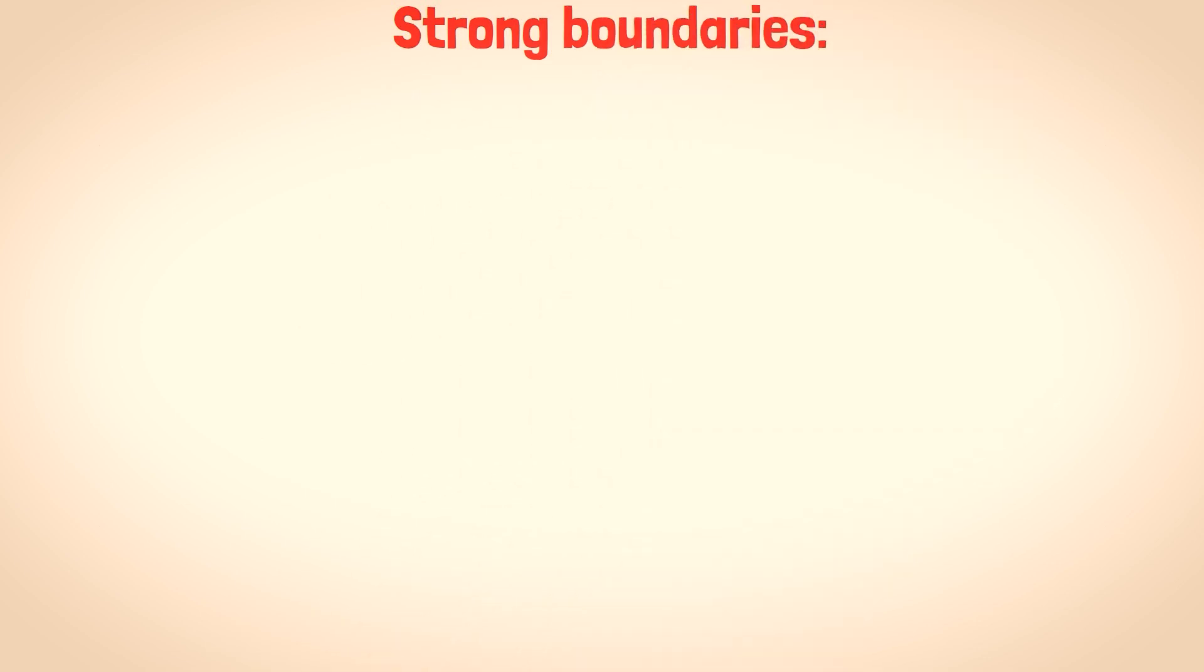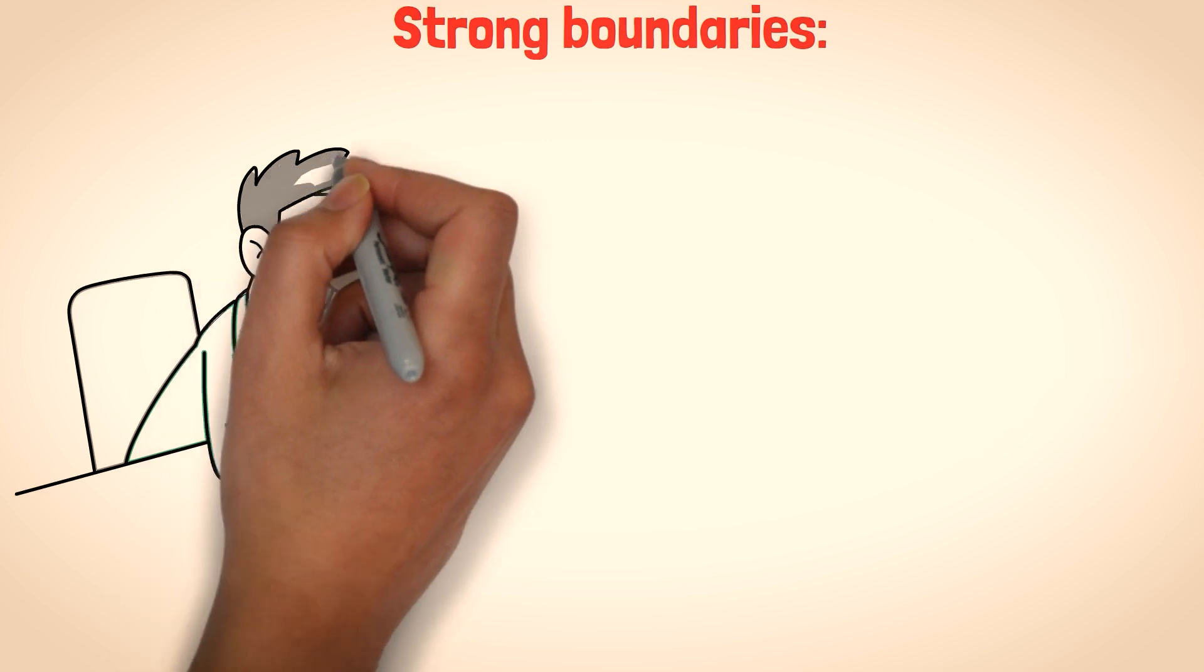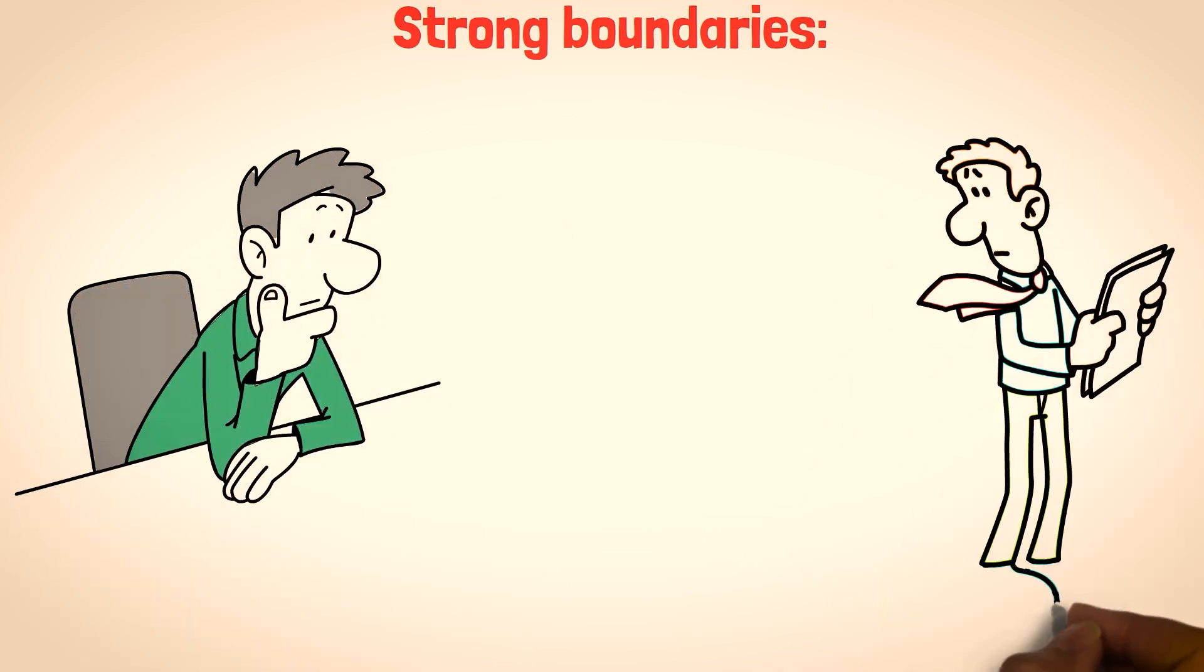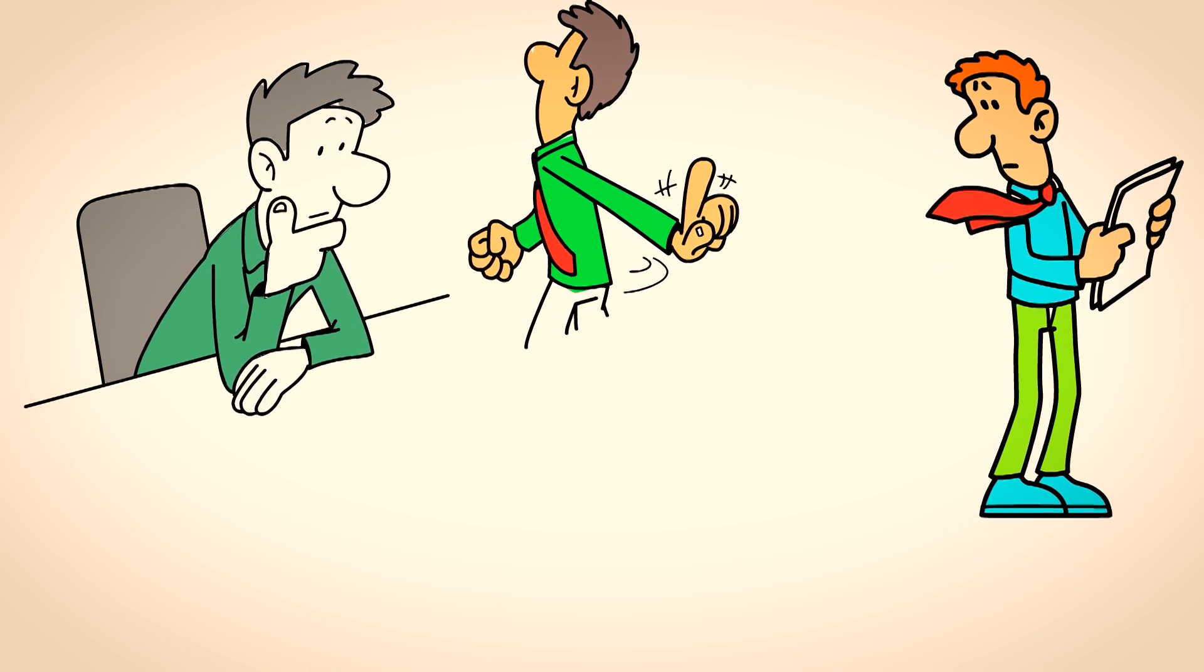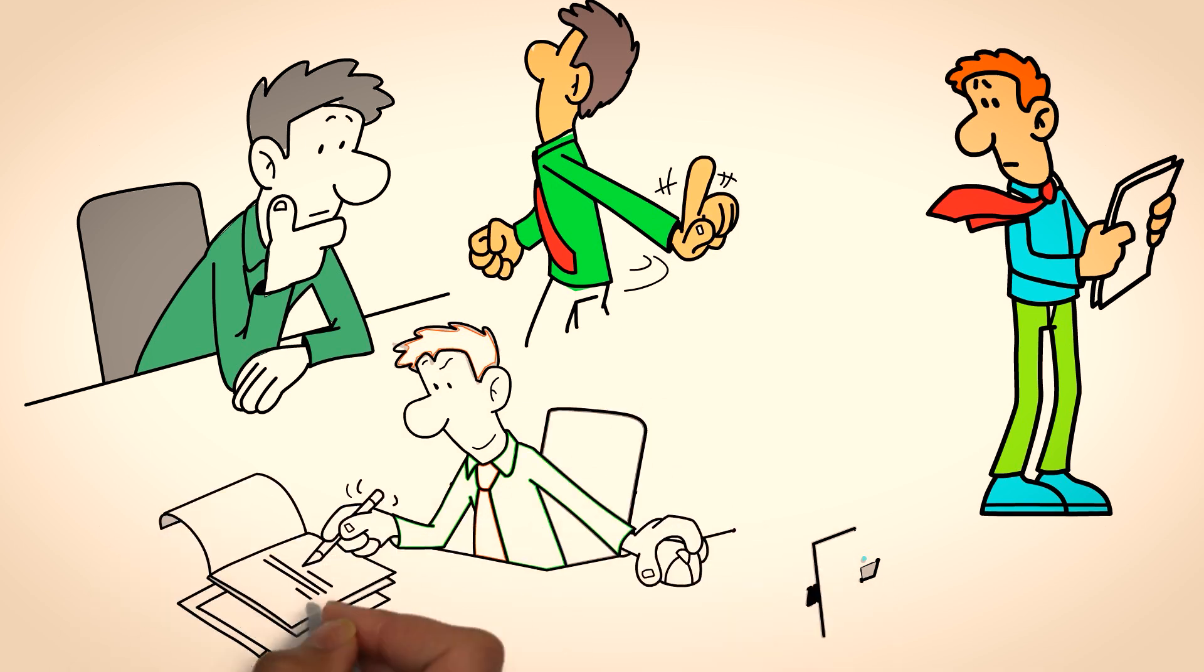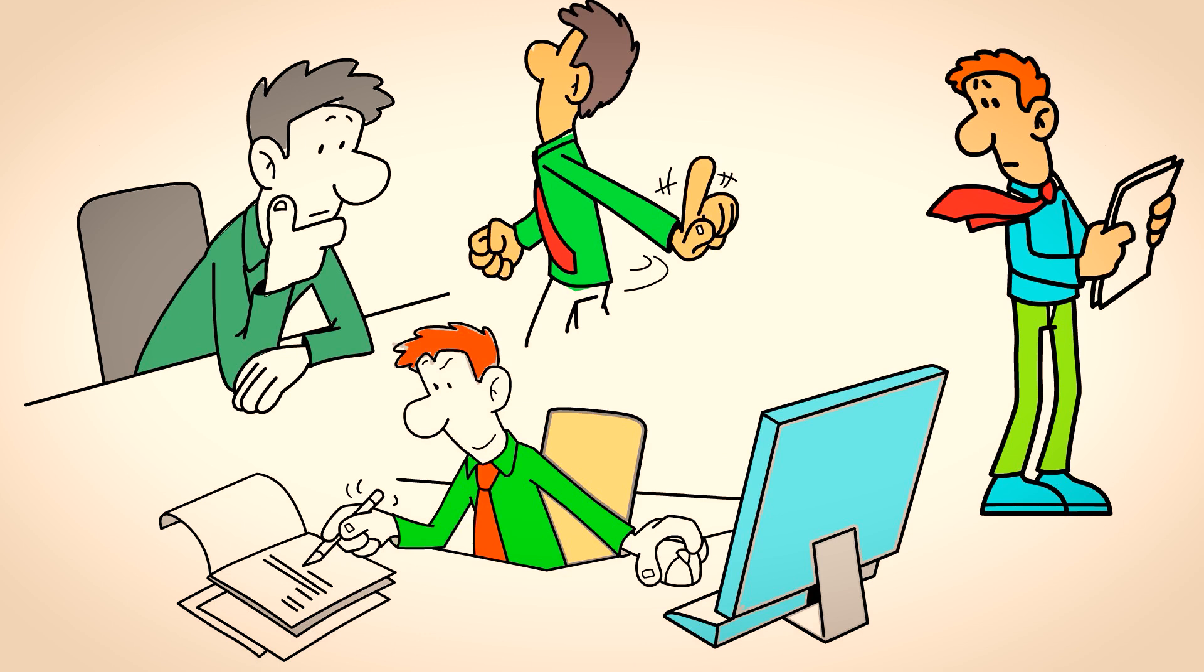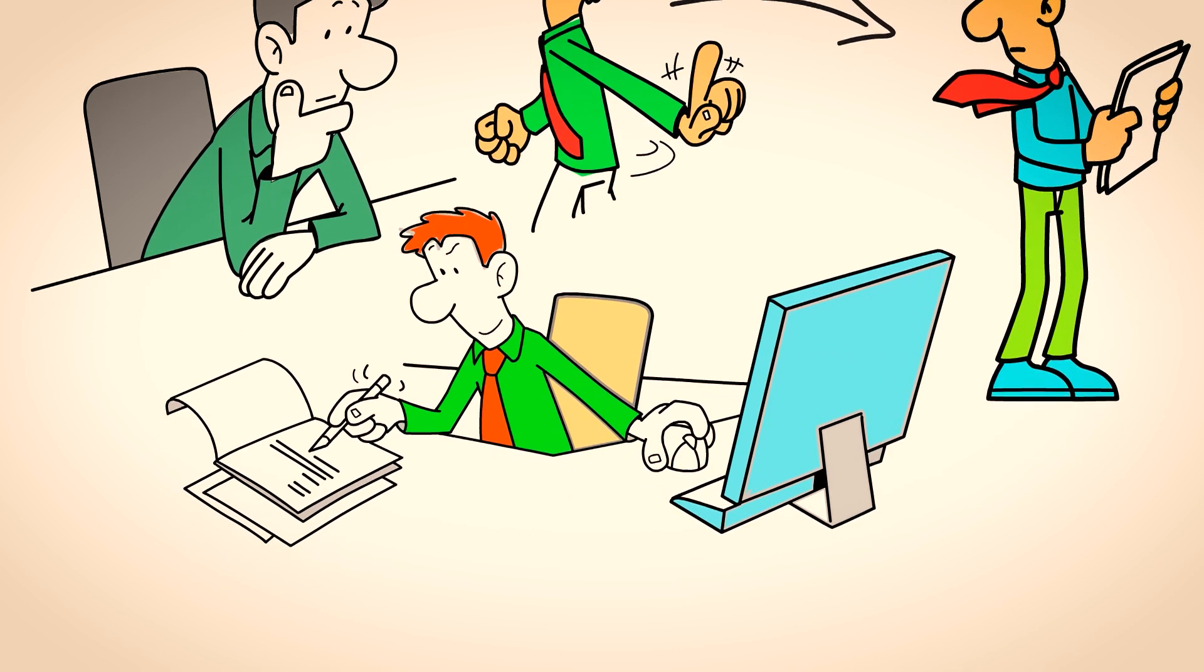Strong boundaries. The people who benefited from you having no boundaries are the ones who become upset when you establish them. Sigma males tend to have well-defined personal boundaries, and are less likely to allow others to cross them. They value their independence and prioritize their own needs and values. Manipulators often rely on blurring or breaking boundaries to exploit individuals. But sigma males' strong sense of self and boundaries act as a deterrent to manipulation.